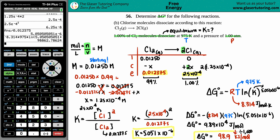And there you go — delta G equals 98.9 kJ/mol. I hope this helped! Let me know in the comments, and I'll be talking to you soon in another lesson. Have a great day and tell your friends about this channel — thanks so much!